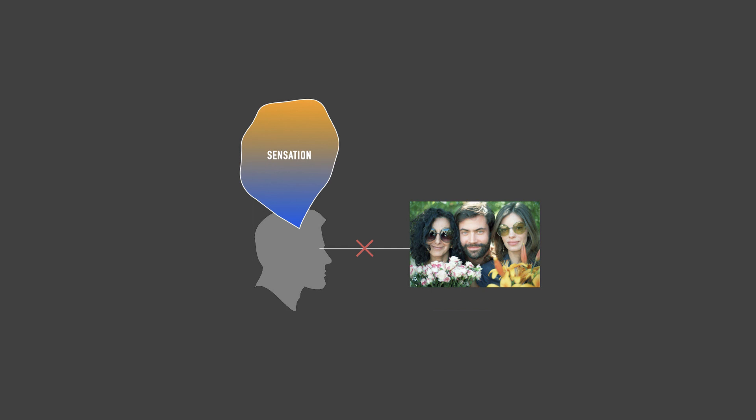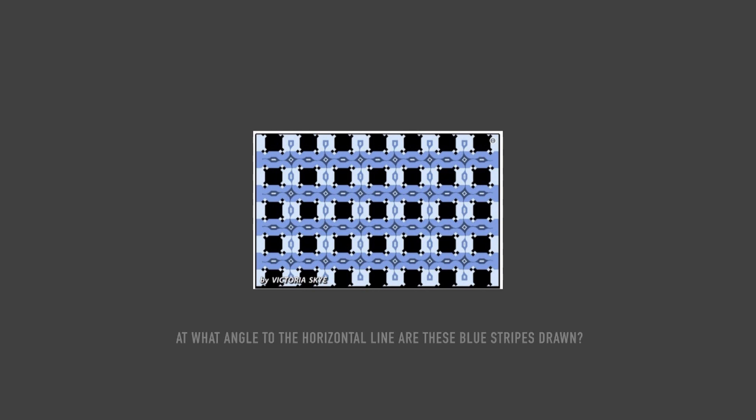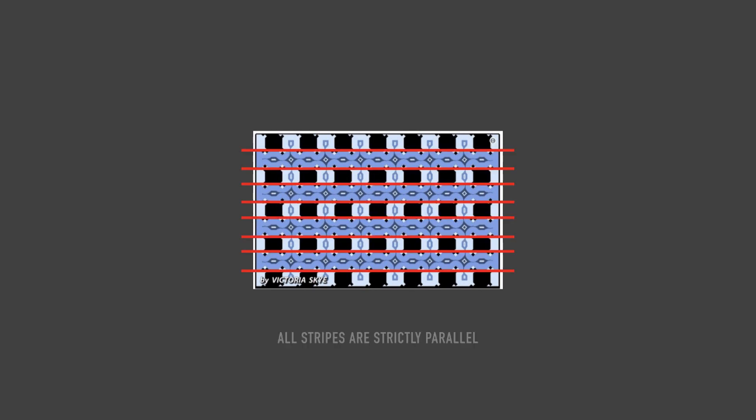Let me show you how your eyes can deceive you. Let's start with a simple geometric test. At what angle to the horizontal line are these blue stripes drawn? To you, it seems that under different angles, like a zigzag, but not really. All stripes are strictly parallel — in order to check that, just add more horizontal lines to the drawing.